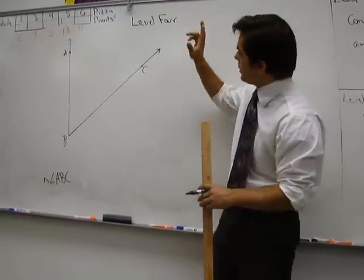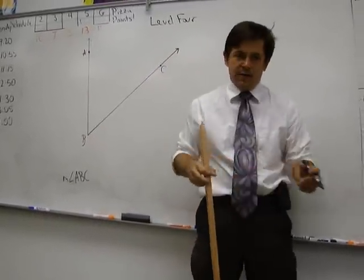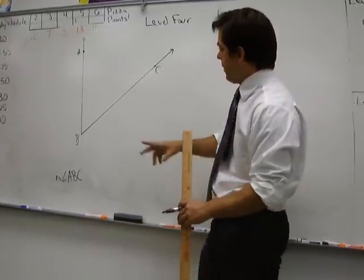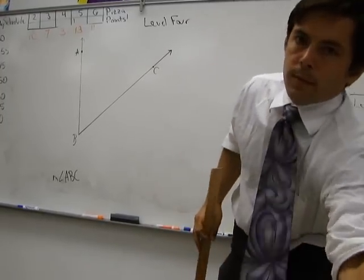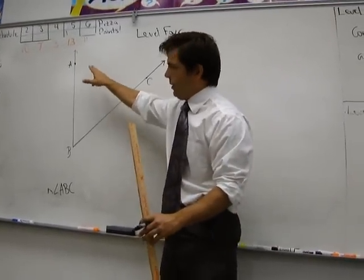Okay, we are going to construct an angle congruent to angle ABC. I have not measured angle ABC, I do not know how many degrees it is, but I'm going to use a compass, a trusty compass, to construct an angle congruent to angle ABC.